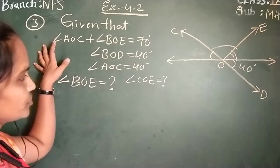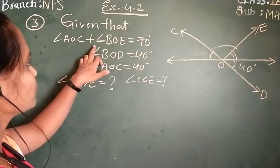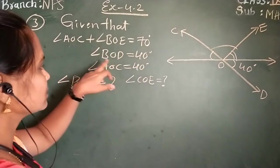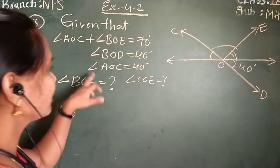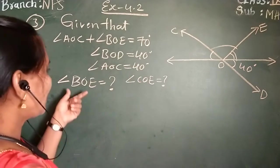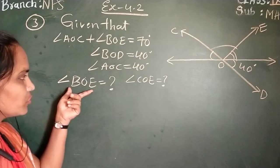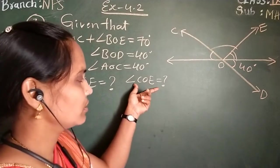Now, in this question, here is the given information: angle AOC plus angle BOE equals 70 degrees, angle BOD equals 40 degrees, angle AOC equals 40 degrees. We need to find out angle BOE and angle COE.